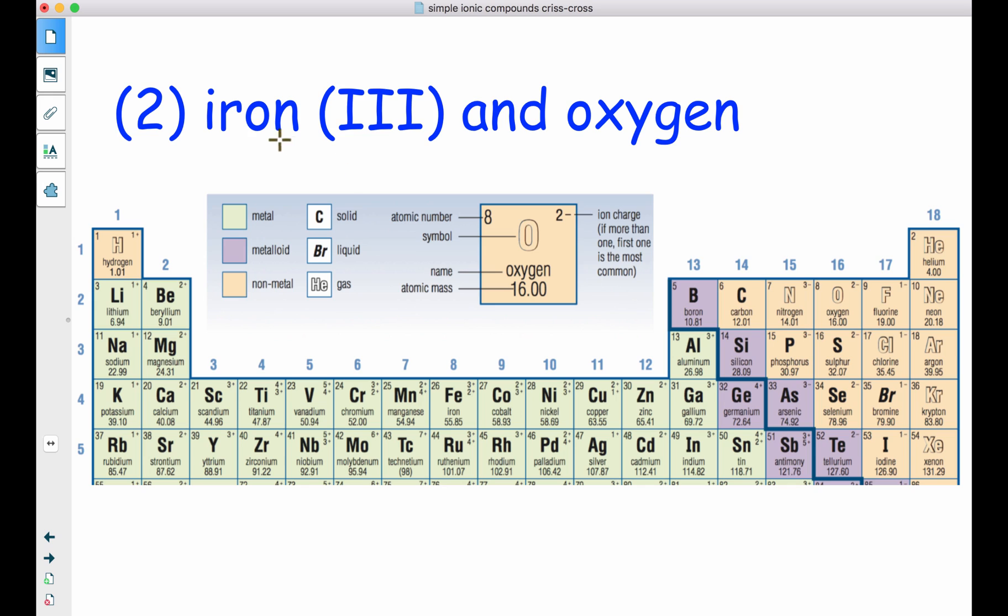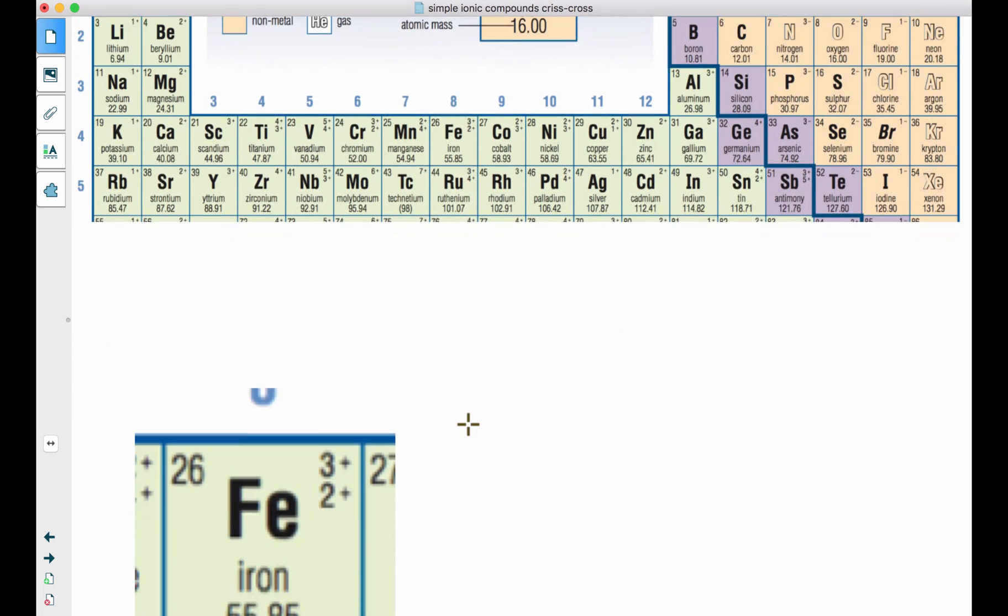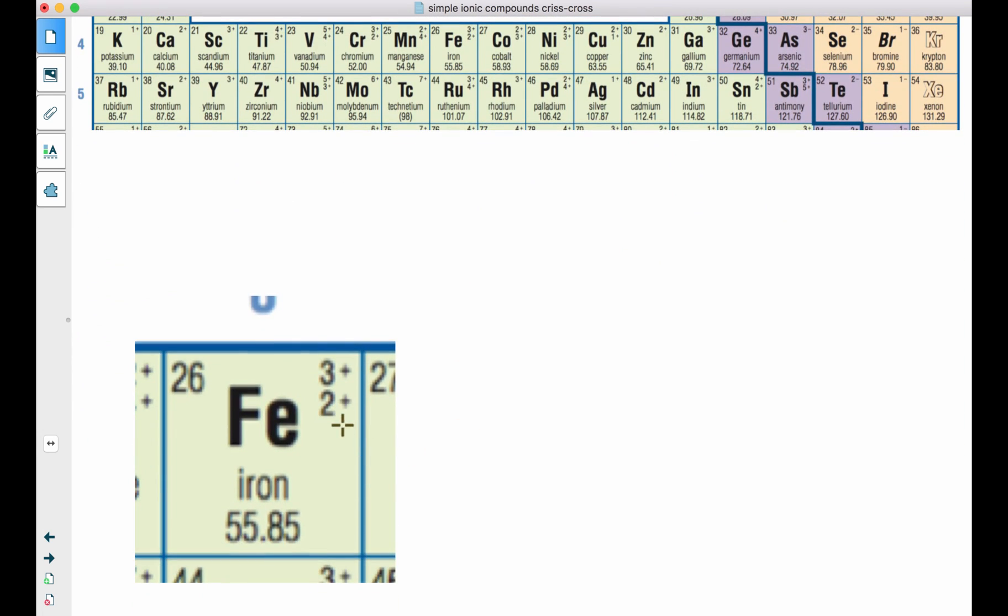Next, let's look at iron (III) with oxygen. Oxygen 2-. Iron, which is number 26, has two possible charges.